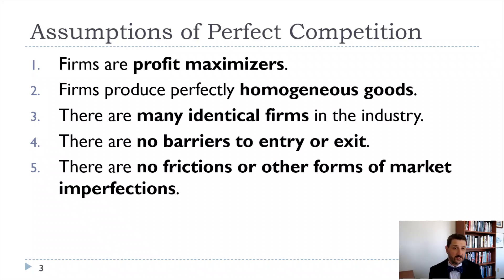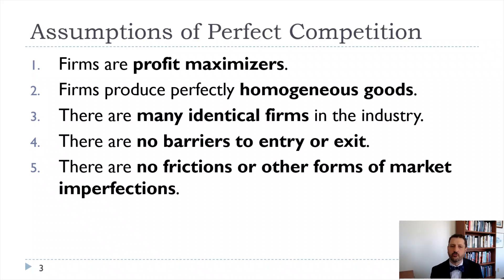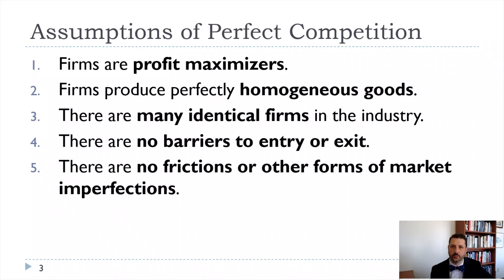We're also assuming there are no barriers to entry or exit. This is important because when profits are low or negative, we expect firms to exit, and when profits are high, we expect firms to enter. High costs to either would introduce frictions and prevent us from reaching perfectly competitive equilibrium. Finally, assumption five: there are no frictions or other market imperfections — no vertical integration, no information asymmetries, no externalities — because any of those can throw off our equilibrium.